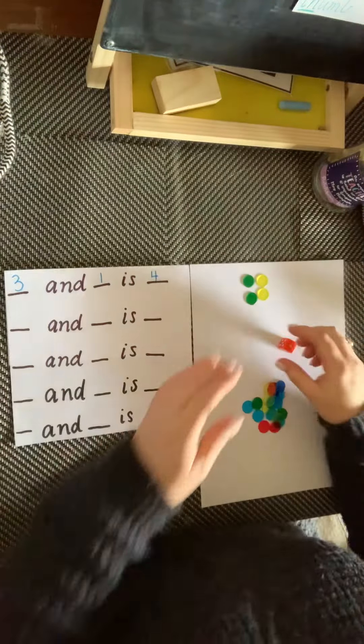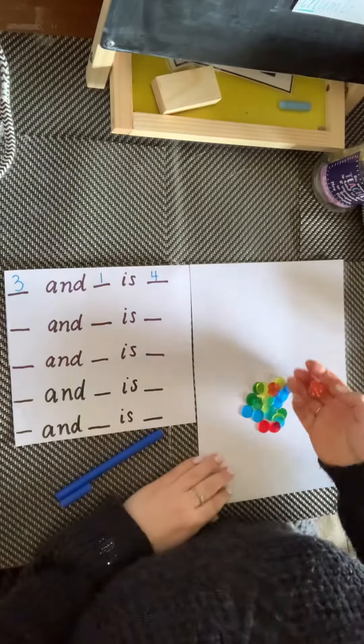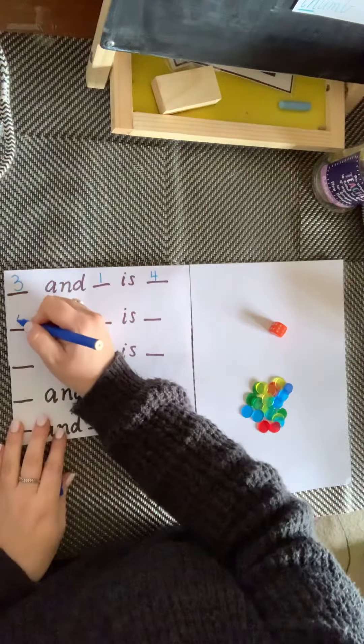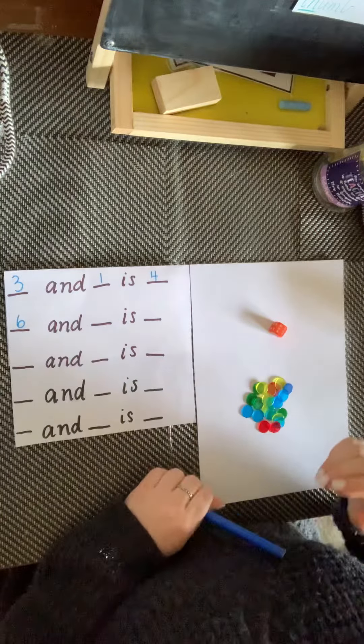And then we start again. Roll the dice. Oh, six. Write the number. Get that number of counters.